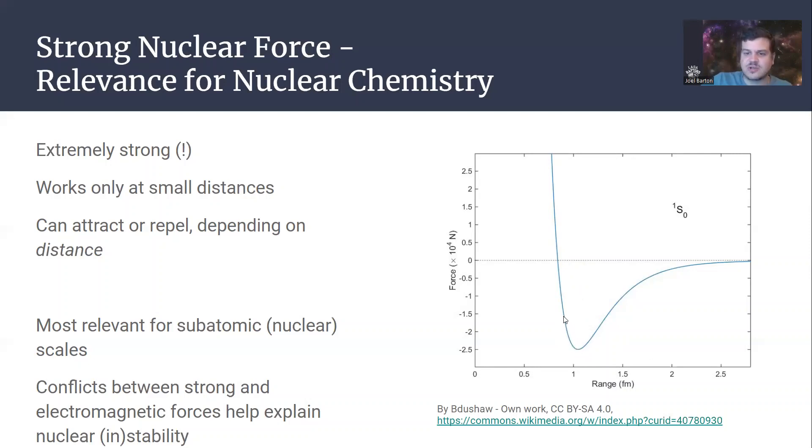However, if you try to get those particles much, much closer to each other than that, the force actually turns repulsive. So it's based on distance. It's not based on charge or anything like that. It's based on how close are the two objects to each other. You can get them this close and they're really attracted to each other. If you try to get them any closer, they end up repelling each other past a certain point. Whereas over here, as soon as you separate them away from each other past about 2.5 femtometers, they don't even feel it anymore. There's no attraction, no repulsion whatsoever. So it's this funny little force that's very, very strong, but only over this very short range. Which is why it becomes really important for nuclear chemistry, as you're going to see here soon. It comes into conflict with the electromagnetic force, and that's going to help explain nuclear stability.